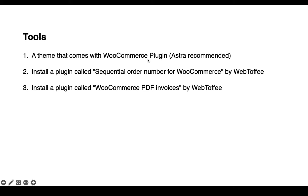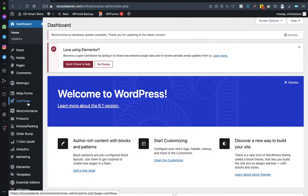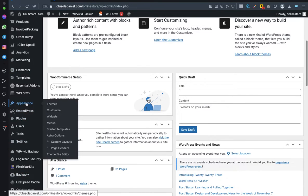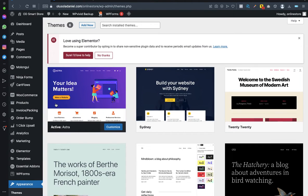With Astra theme, you then install Starter Templates — you should be able to get ecommerce store templates there. I'll quickly walk through how to install Astra and Starter Templates and how to select an ecommerce template. Go to Appearance, then Themes, and search for Astra.